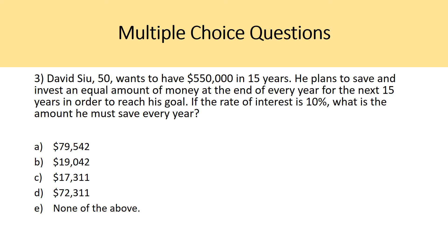Question three: David, age 50, wants to have $550,000 in 15 years — when he's 65. He plans to save and invest an equal amount at the end of every year for the next 15 years to reach his goal. If the rate of interest is 10%, what is the amount he must save every year? So instead of finding K as in question two, here you're identifying the savings variable — the difference between earnings and consumption contributed each year.